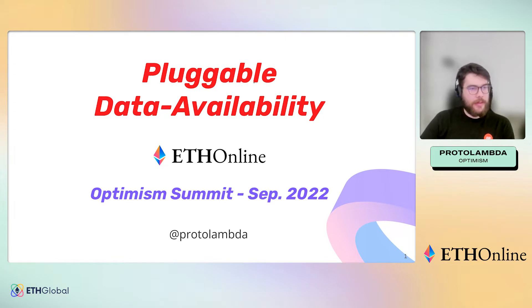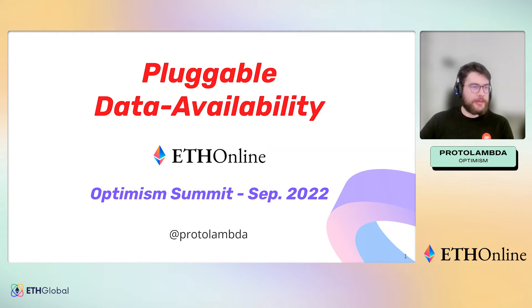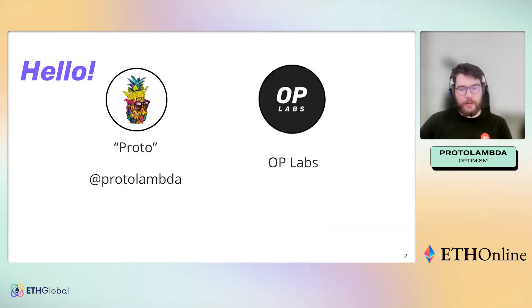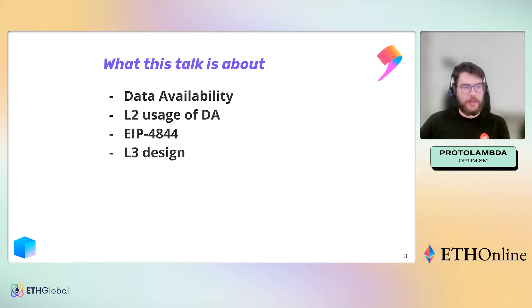My presentation is about pluggable data availability. With Optimism, we're both stewarding layer one development of increases in data availability as well as building the technology that uses data availability, called rollups. I'm Proto, also called protolambda, and with OP Labs we're building this rollup technology and building towards better properties which use this data availability. So let's talk about data availability, layer two usage, and then some layer three design at the end.